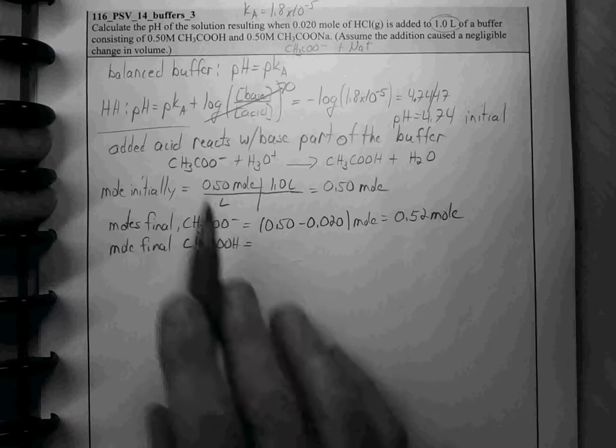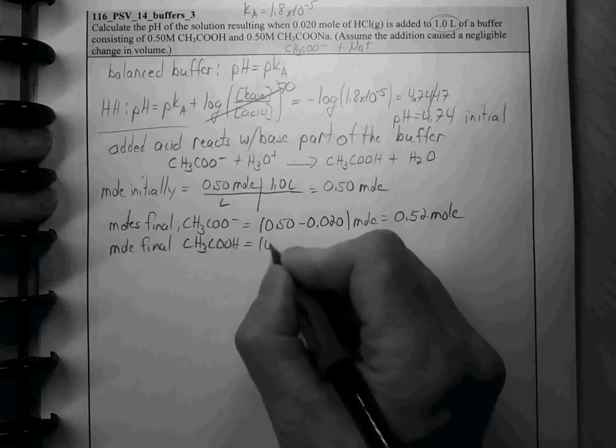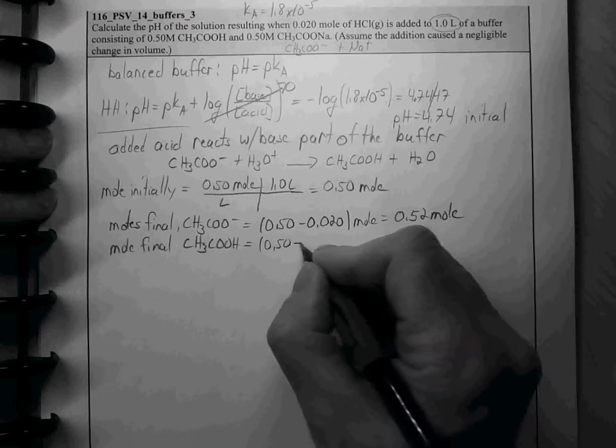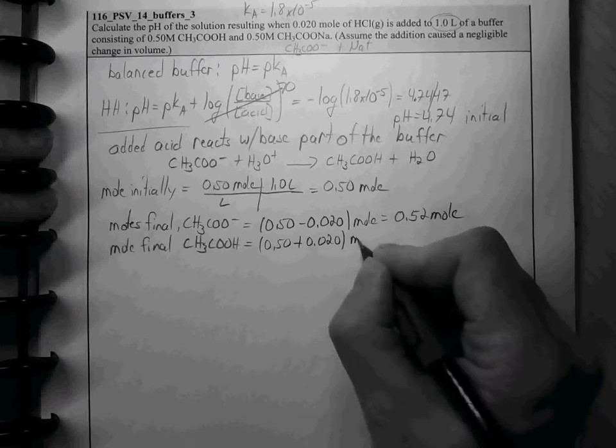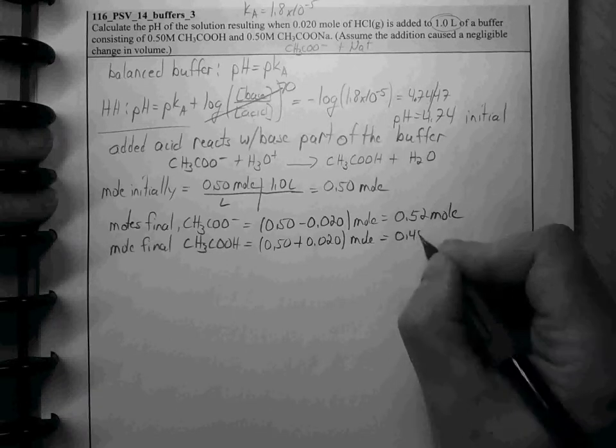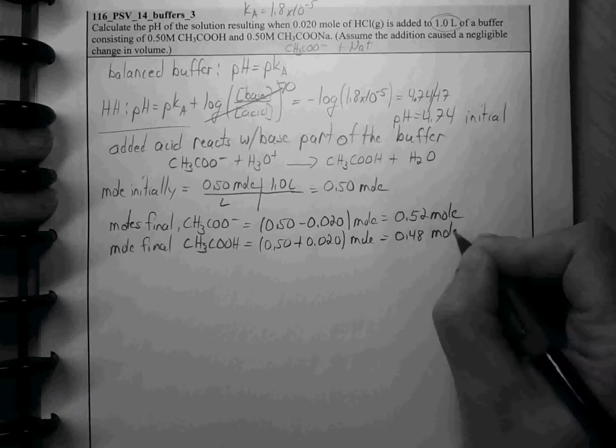And the final moles for the acid goes up by the same amount that the base is losing. So, we're losing some of the base and creating an equal amount of the acid. So, that's plus 0.020 moles, giving us 0.48 and 0.52 moles.